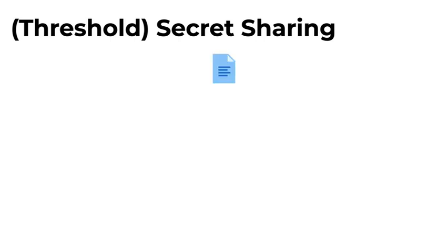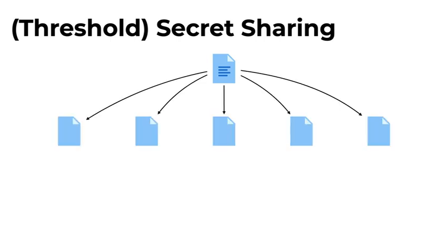In a threshold secret sharing scheme, a dealer who has some secret — depicted here by a blue file — can split this secret into a bunch of shares such that any number of shares above the reconstruction threshold can reconstruct the secret, whereas any number of shares below the reconstruction threshold reveals no information about the secret whatsoever.